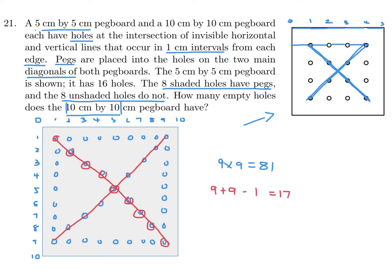The total holes are 81. Seventeen are shaded and have pegs inside. The question asks for empty holes, so the empty unshaded ones would be 81 minus 17, which is 64. Starting in 2022, the CEMC changed their format so that questions 21 through 25 require you to fill in the answer directly. The answer is 64.